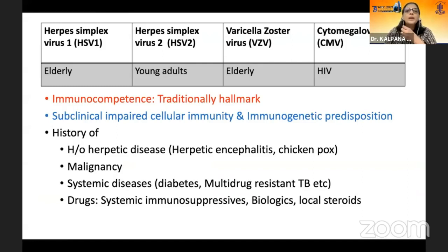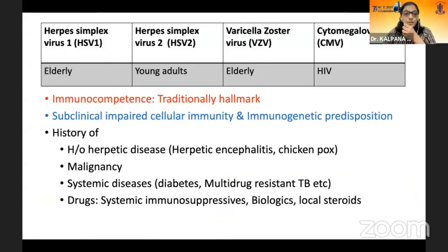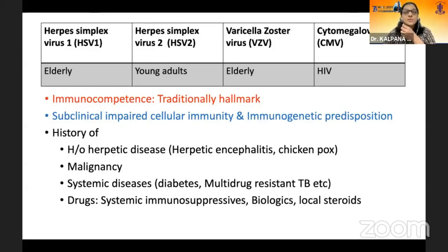Acute retinal necrosis is most commonly caused by herpes simplex and varicella zoster virus, but there are reports of cytomegalovirus also causing ARN in HIV. The traditional hallmark is immunocompetence, but these patients have some amount of subclinical immune dysfunction. When you look at the history, they usually have a history of herpetic disease. They could have malignancy, systemic comorbidities like diabetes or multi-drug resistant TB where cell-mediated immunity is affected, or iatrogenic immune suppression in the form of systemic immunosuppressives, biologics, or even local steroids.